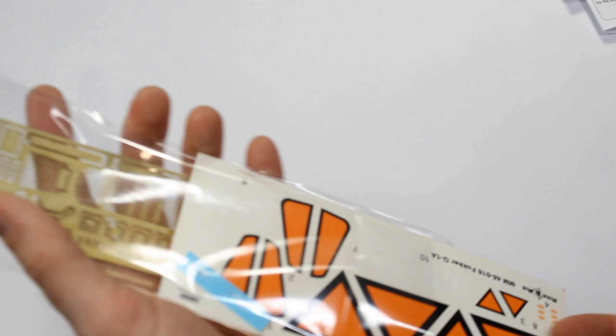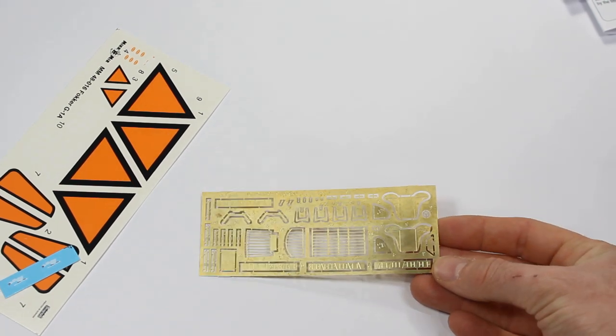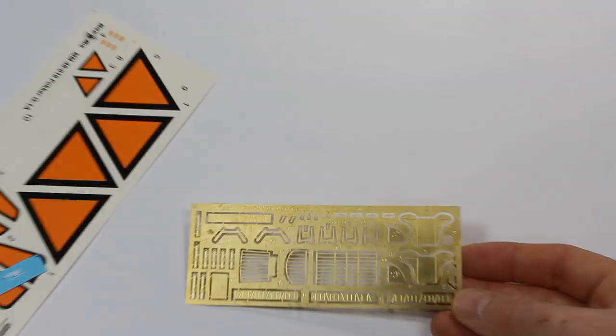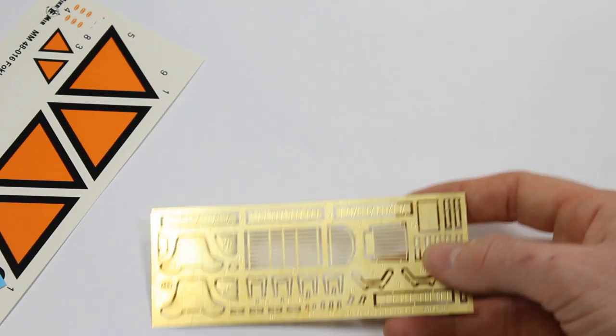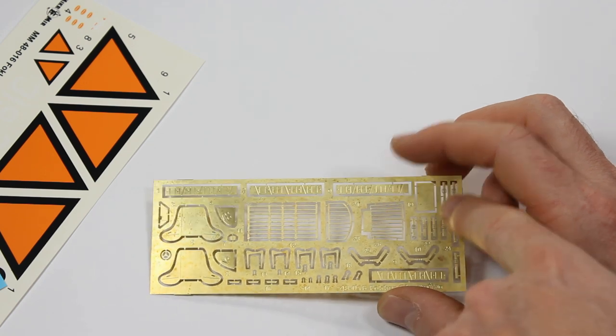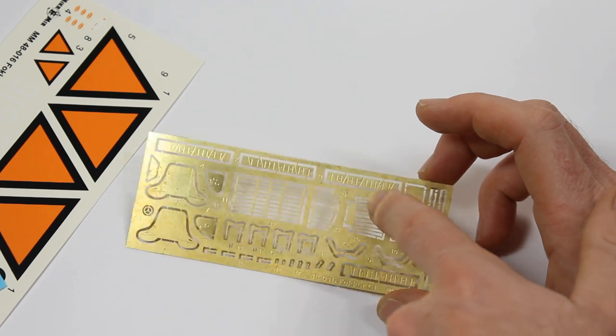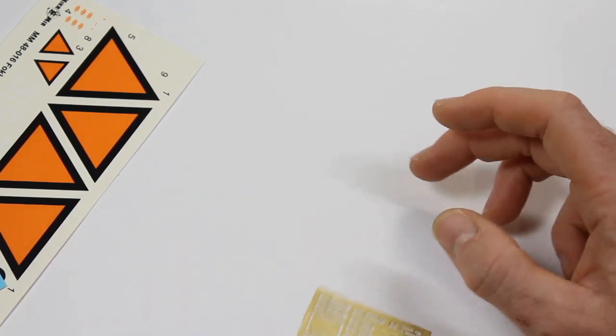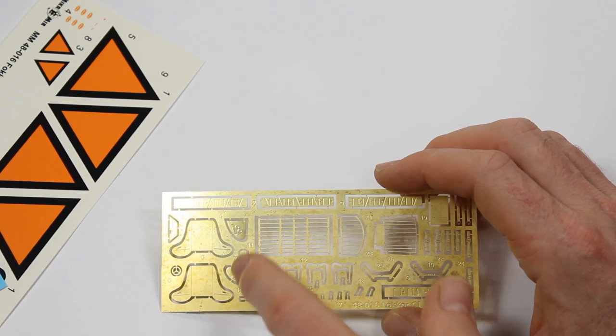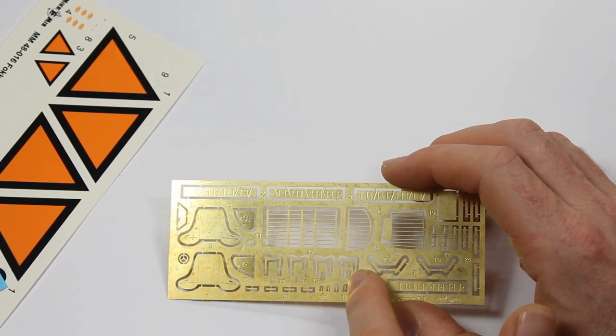Got a resealable bag which gives you the photo etched parts and the decals. Looking at the photo etch, it's very finely done and very thin, quite flimsy. There's numerous parts on here which will add finesse and fine details, including harnesses and these very fine parts here—might be the internals of the wheel well, not sure, but it looks very good.